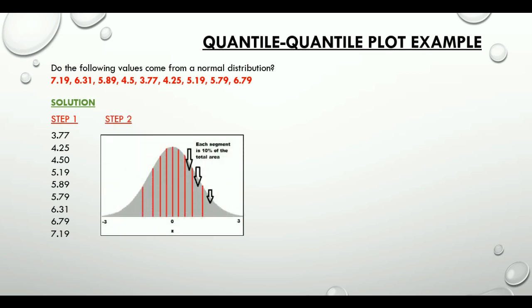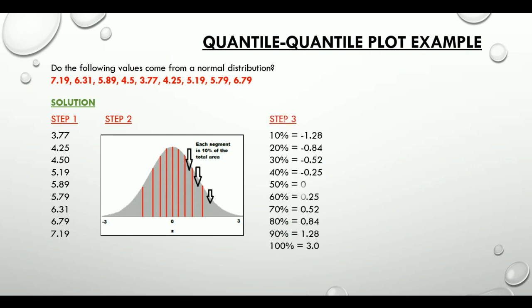Since we have nine values, or nine data points with us, it is nine plus one, that is ten segments. In our example, since each segment is an area here, each segment is 10 percent of the total area. Step three tells us to get the Z values for each segment from the Z table, and here are the Z values.